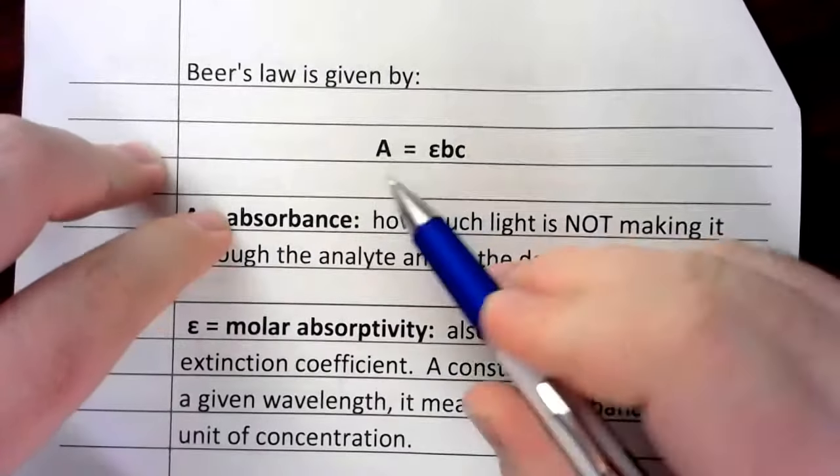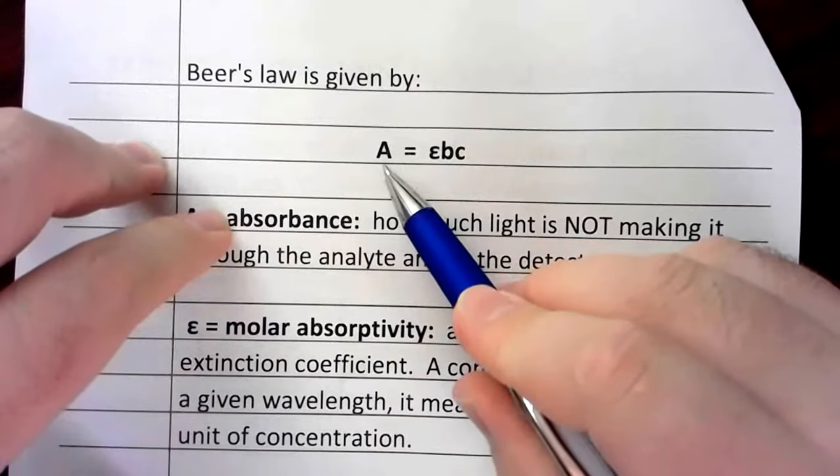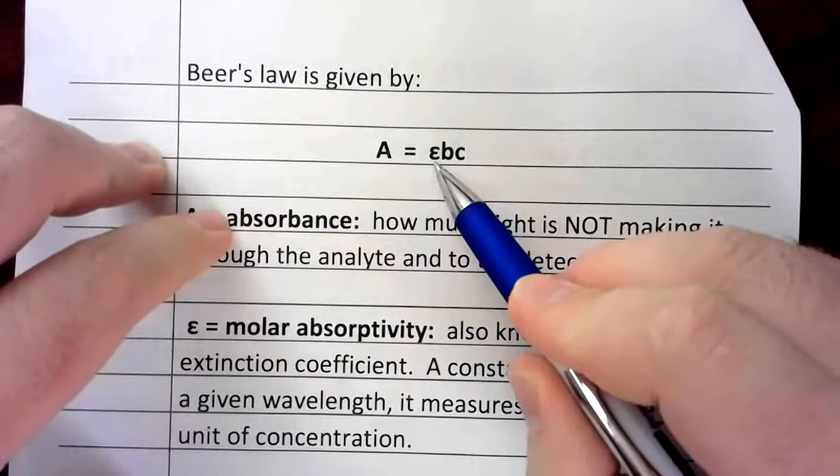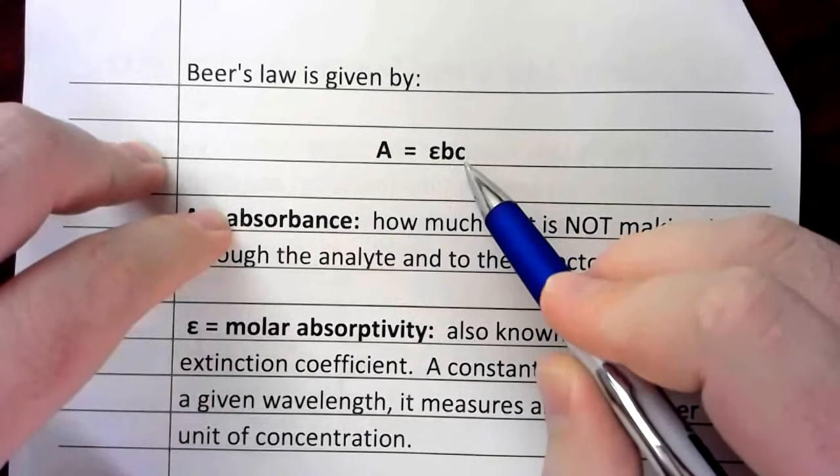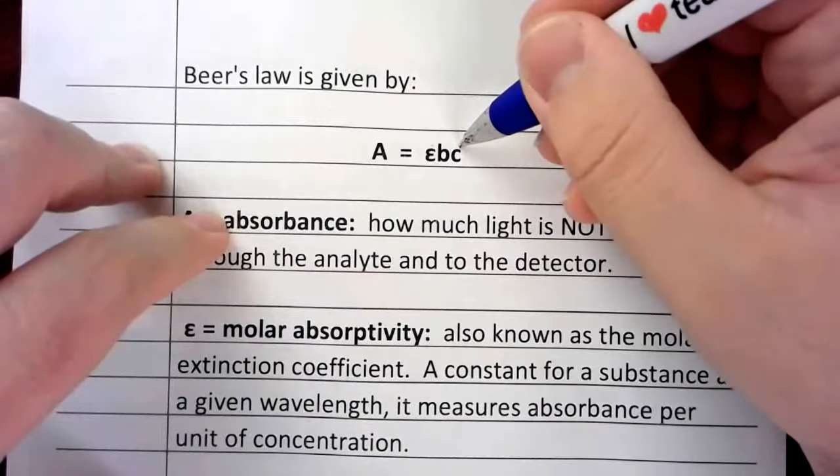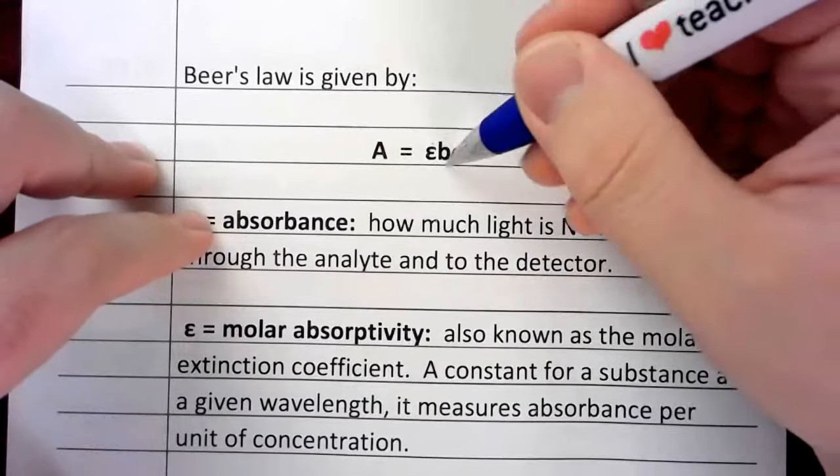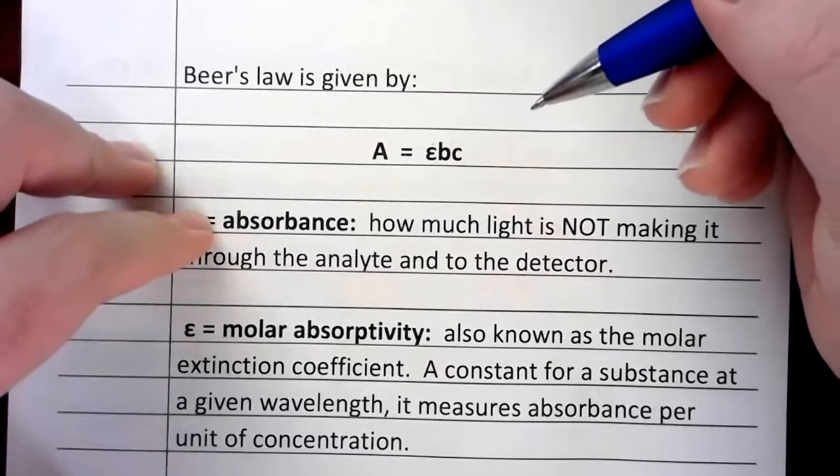And then c is concentration. So essentially, how much light is being absorbed depends on how much would be absorbed times how far the light has to go times how much concentration there is. Epsilon and c here work together along with the path length to tell you how much light is going to be absorbed.